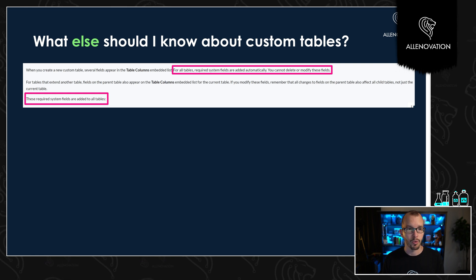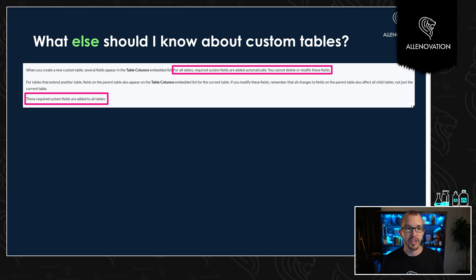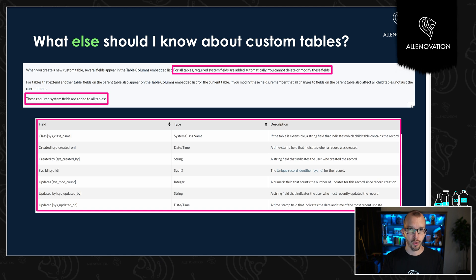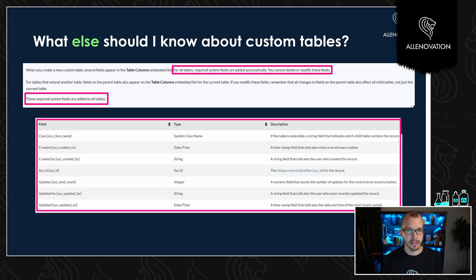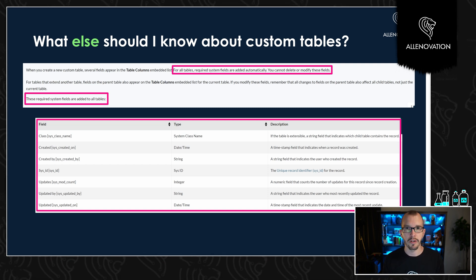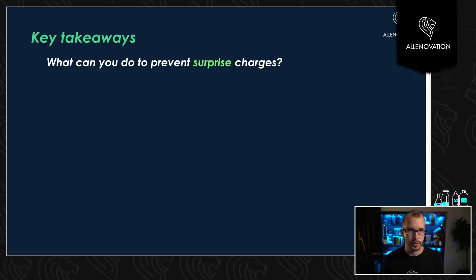You also really want to make sure that when you create a custom table, you're aware of the required fields that all tables need to have. This list here shows all of the fields that are going to be on your custom table when you create it. A lot of people create a new table, see all these fields, and go, 'Whoa, I didn't create these fields.' Well, these are all required to be on every single table — you're going to see created on, created by, updated by — all of those fields are going to be there.